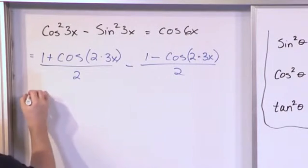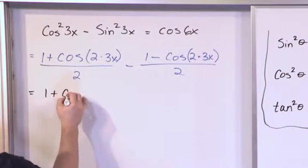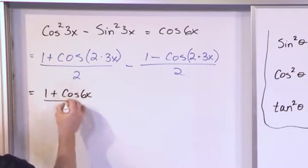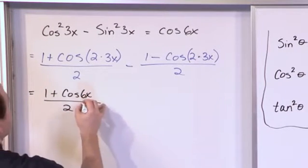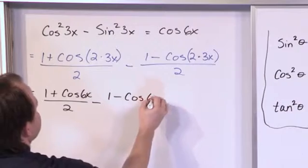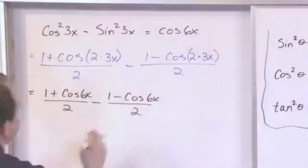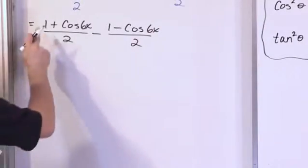So let's go ahead and continue. We'll have 1 plus cosine 6x over 2 minus 1 minus cosine of 6x over 2.